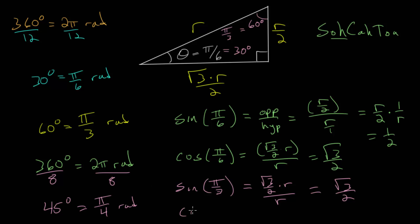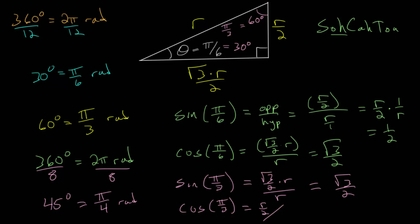And lastly, if we do the cosine of pi over 3, we look at the adjacent side to the 60 degree angle, this pi over 3 radian angle, which is R over 2, and we will divide all of that by the hypotenuse, which is R, and we saw above that that simplifies to 1 half.